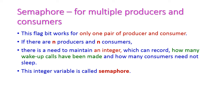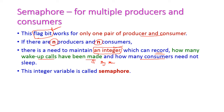However, the flag bit works only for one pair of producer and consumer. If there is only one producer and one consumer, the boolean variable flag is sufficient. But if there are N producers and N consumers, the flag bit is not suitable. Instead we use an integer variable that records how many wake-up calls have been made and how many consumers need not sleep. This integer variable is called a semaphore — please watch the previous video on semaphore to understand how it solves the multiple processor problem.